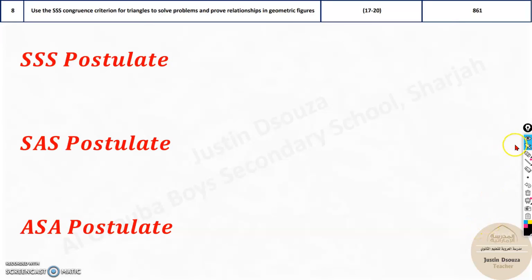The eighth topic is on the postulates of sides and angles. You can see there are three postulates: SSS, SAS, and ASA. What does that mean? These mean if all the sides are equal, then the triangles are congruent.